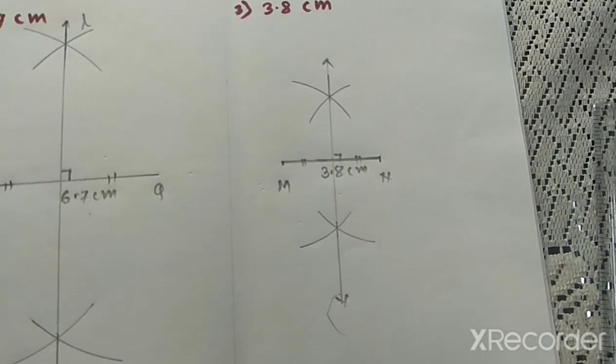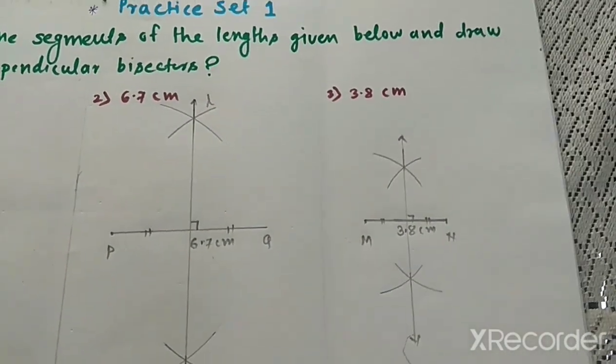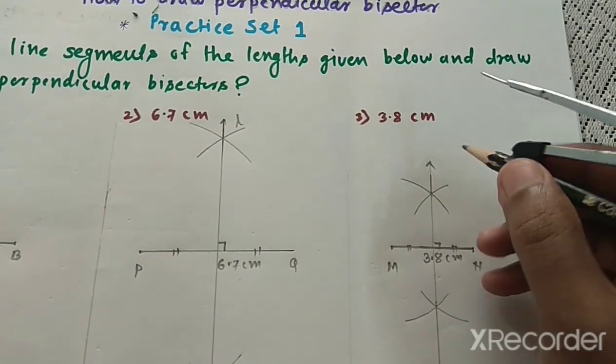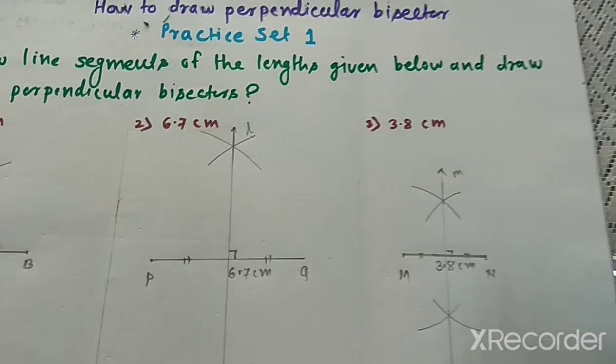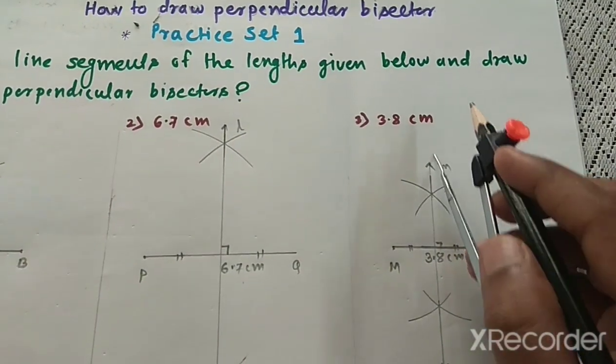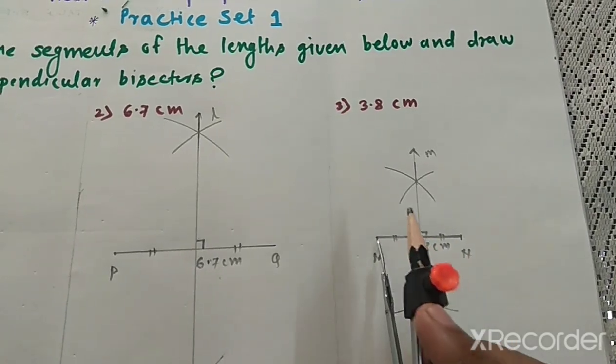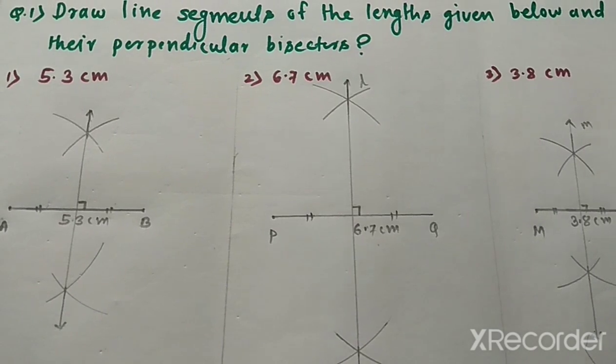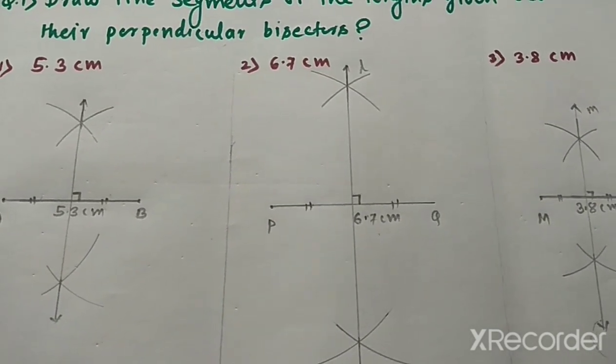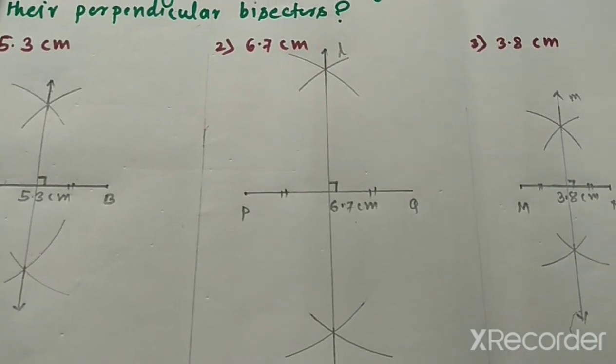See how it looks. So we can name it small m. This line is a perpendicular bisector of segment MN. You can take different lengths of segments, bisect them, and practice it. Thank you.